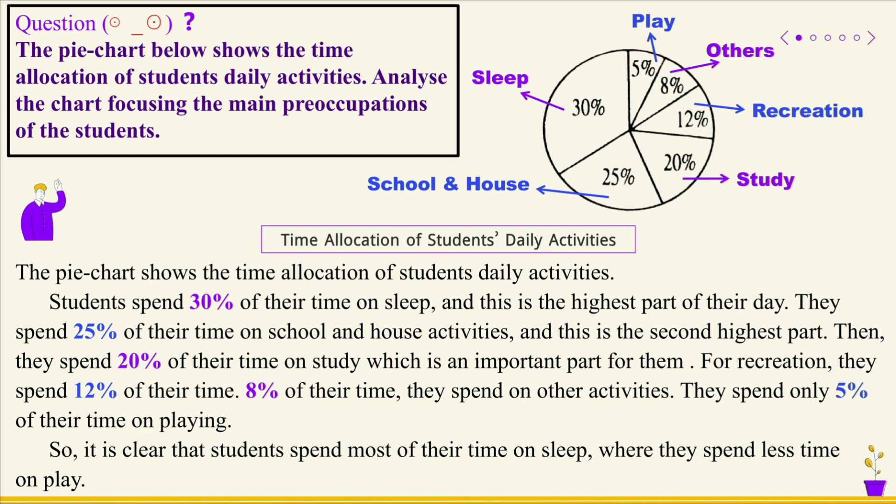Then, they spend 20% of their time on study, which is an important part for them. For recreation, they spend 12% of their time. 8% of their time they spend on other activities. They spend only 5% of their time on playing.